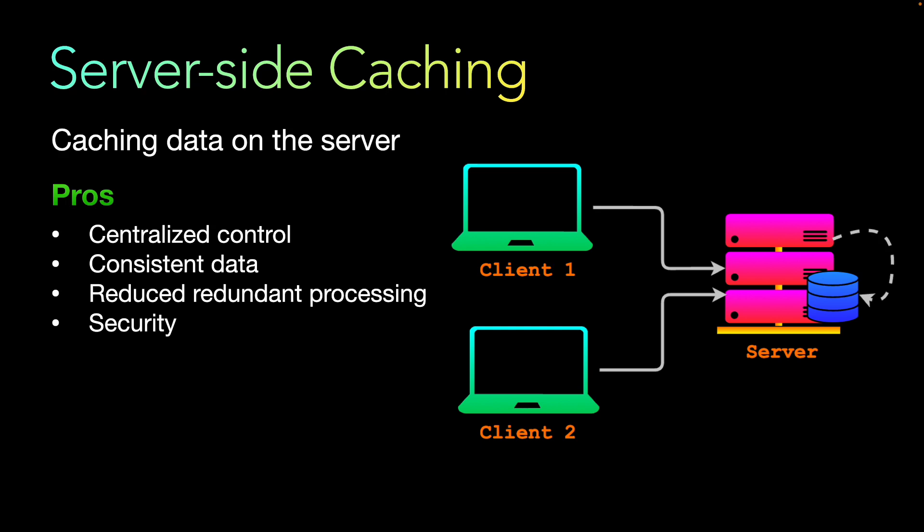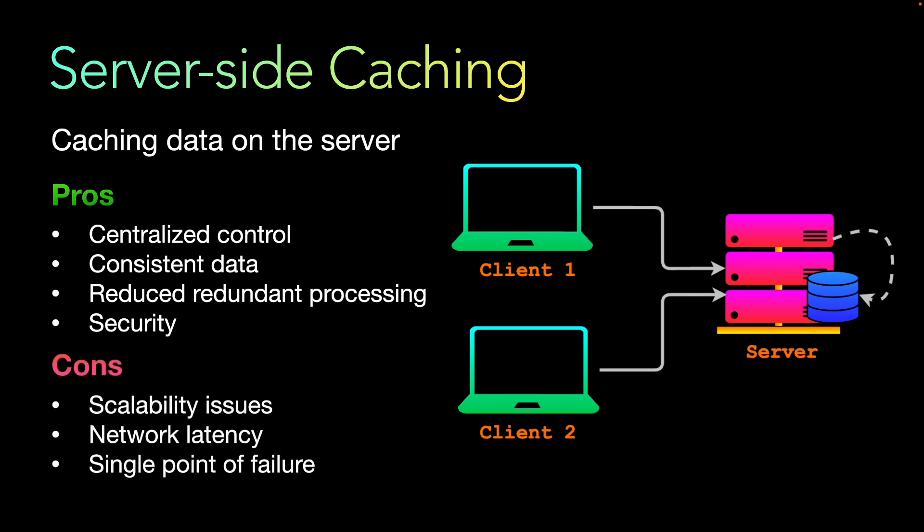The cons are: it has scalability issues — high traffic can overload the server, and if you have a multi-tenant system where multiple clients are using it, it requires more resources. There is network latency, as requests need to travel to the server rather than being served from the client's side. It is also a single point of failure — if something happens to the server, the entire cache can get wiped out.